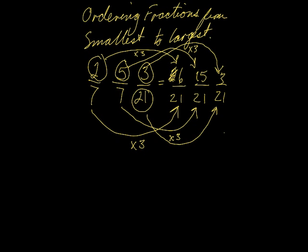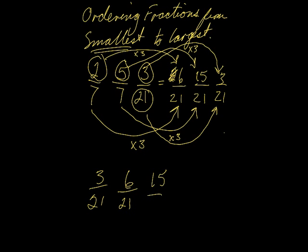I've made all of these equivalent fractions. Now I can just put them in order. I've got 6/21, 15/21, and 3/21. Ordering from smallest to largest: the smallest is 3/21, then 6/21, and then the largest is 15/21. That is how you order fractions from smallest to largest.